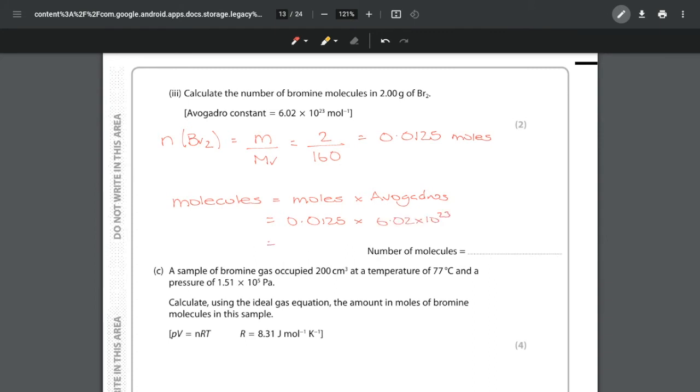In other words, 0.0125 multiplied by 6.02 × 10²³. I get a final answer of 7.525 × 10²¹. That gets me my two marks—one mark for the number of moles, one mark for working out your number of molecules.